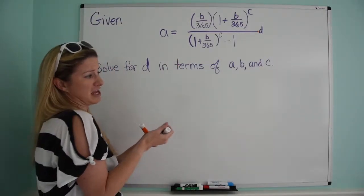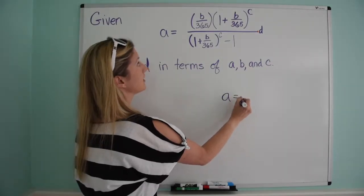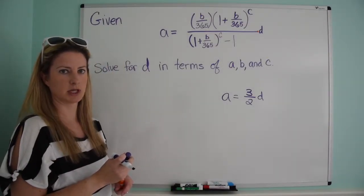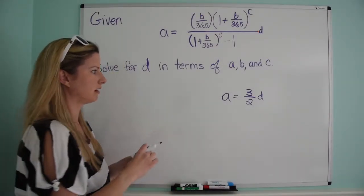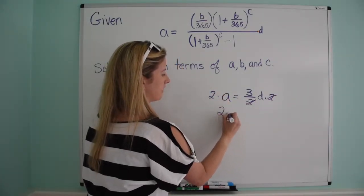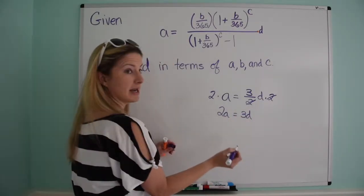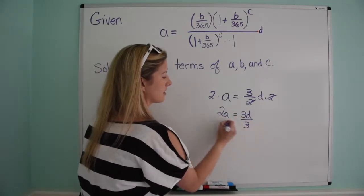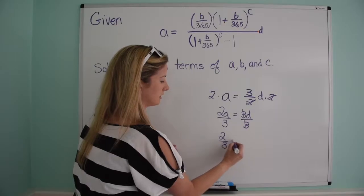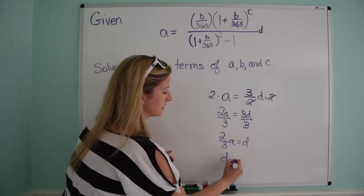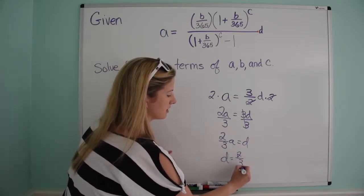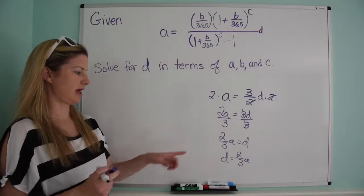Actually, if you think about it, to give you an example, what if I just wrote a equals 3 over 2 times d and said solve for d. Well you would say okay, that's not bad. I'm going to multiply both sides by two, cancel the denominator over here. So then I have 2a equals 3d. And then I'm going to divide both sides by three, cancel that there, and I have 2 thirds a equals d. And because I always like to have the variable you solve for on the left, we're just going to rewrite that as d equals 2 over 3a.